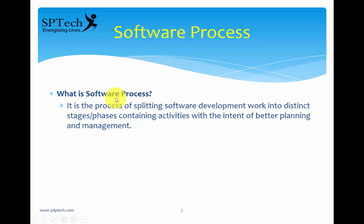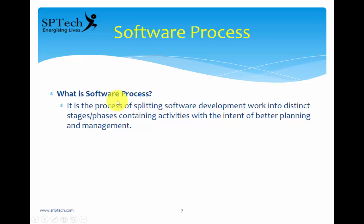In order to develop a product, whether customized or generic, you need to have a process. A process is a process of splitting the software development work into distinct stages containing activities, with the intent of better planning and management. That is what you mean by a software process — it is splitting the software development work into distinct stages or phases.